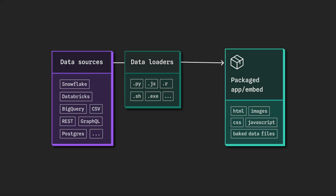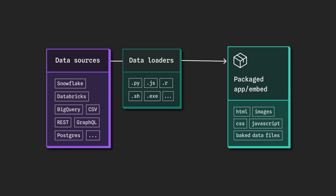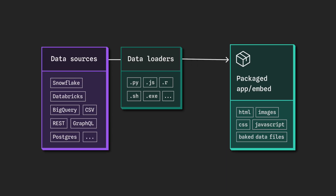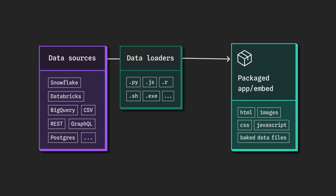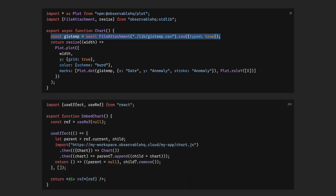Embeddable components can be any function or web module. Code is fully self-contained and includes its own data, which makes it easy to embed anywhere. Here's an example function that generates a chart of temperatures using Observable Plot and brings its own data from a data loader. And this is how you use it in a React web app the way you'd expect.